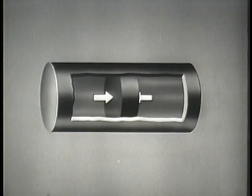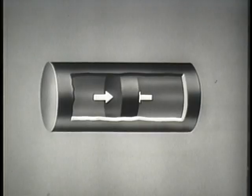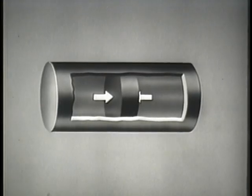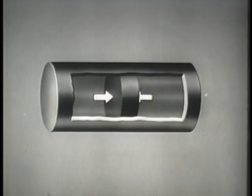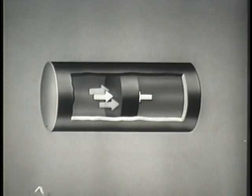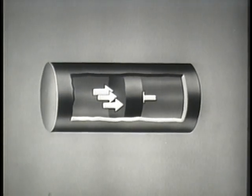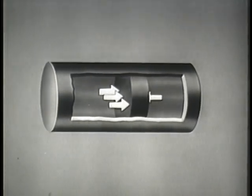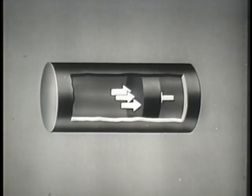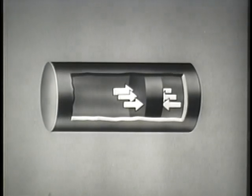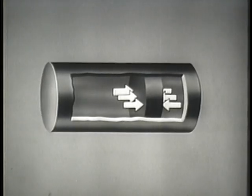Pressure differential is illustrated by this section of pipe. In the pipe is a movable block. The arrows on either side of the block represent equalized pressure. As pressure on one side of the block is increased, a pressure imbalance or differential is created in the pipe, moving the block in the direction of the lower pressure. The moment the pressure on the opposite side of the block is increased to equalize the pushing force, the motion of the block is stopped.